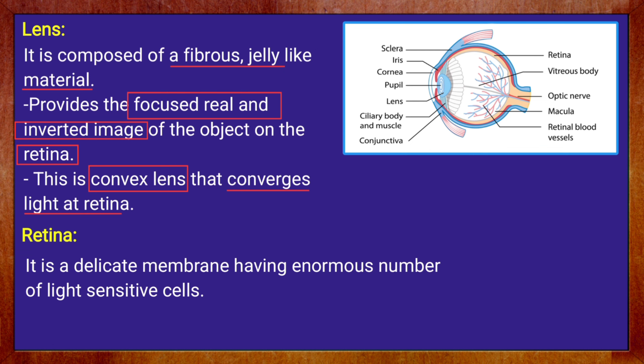Retina is a delicate membrane that has a lot of light-sensitive cells. It is where the image of the object is formed in our eyes.